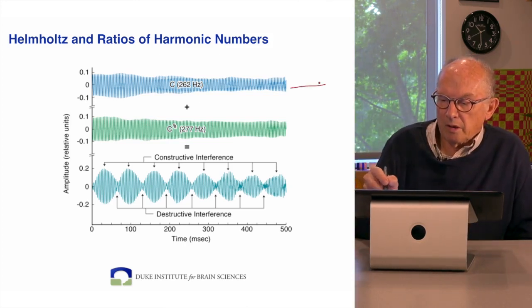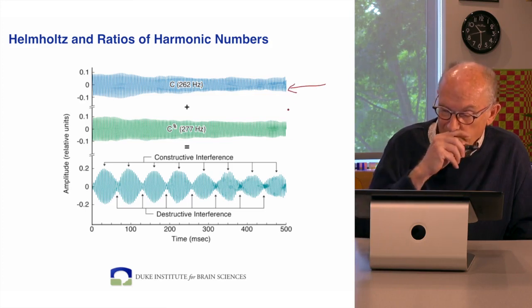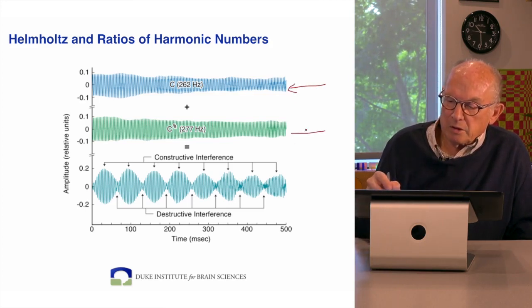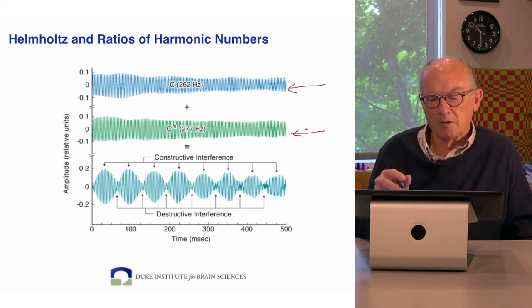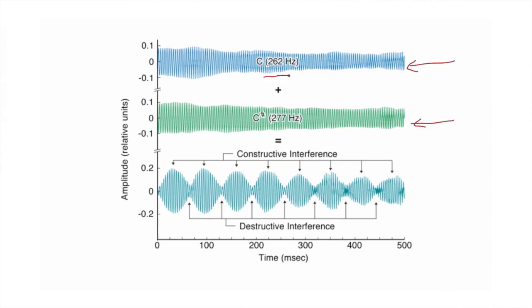So here is C, and here is C sharp. And the frequencies in the middle range of the piano are 262 hertz for C and 277 hertz cycles per second for C sharp. And you can see that when these two tones are played together and they form a minor second,